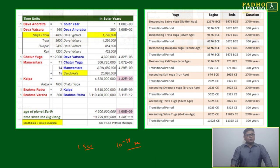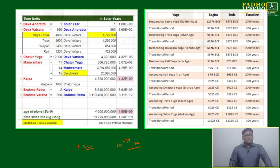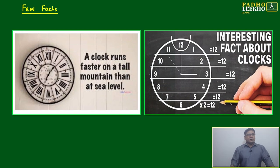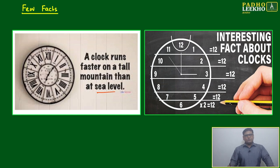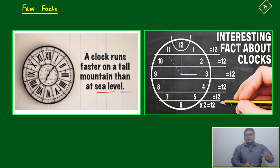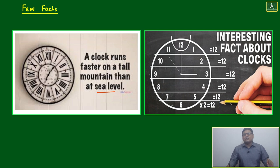This is a big calculation — one solar year was divided into many smaller units. The small calculation I'm telling is that ancient time measurement went down to 10 to the power minus 18 seconds. One interesting fact: a clock runs faster on a tall mountain than at sea level, due to pressure difference. The spring-based mechanical mechanism inside the clock is affected when pressure changes appreciably between two locations, causing it to gain or lose time.